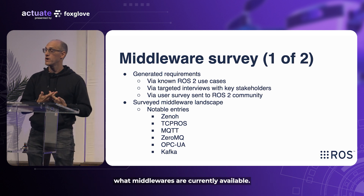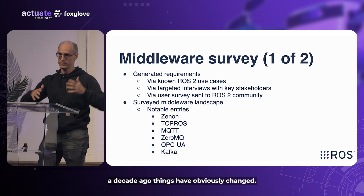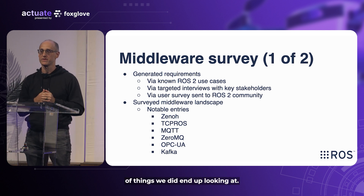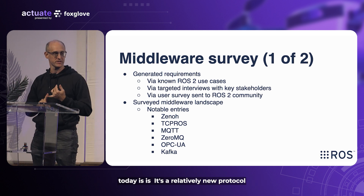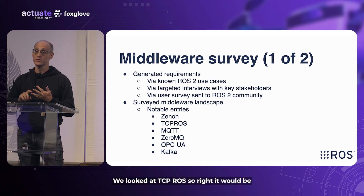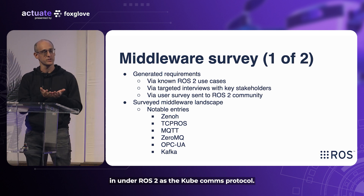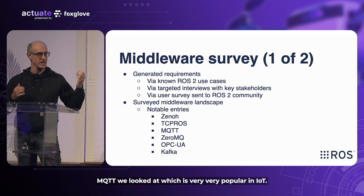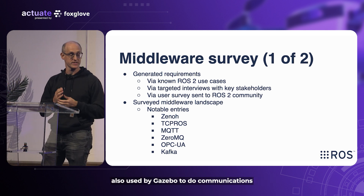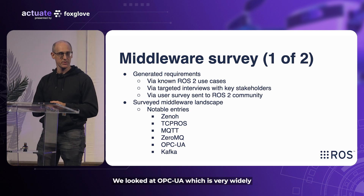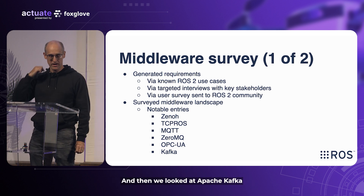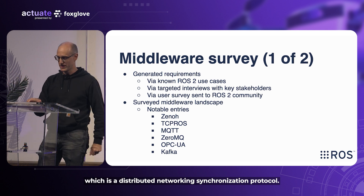The second major thing was surveying what middlewares are currently available, because since DDS was chosen a decade ago, things have obviously changed. This is not a full list — the full list is in the paper — but some notable entries we looked at: Zenoh, which is what we're talking about mostly today, a relatively new protocol with a lot of interest from the community; TCP ROS, the ROS1 protocol that could be slotted back in under ROS2; MQTT, very popular in IoT; ZeroMQ, popular in the community and used by Gazebo; OPC UA, widely used in industrial automation; and Apache Kafka, a distributed networking synchronization protocol.